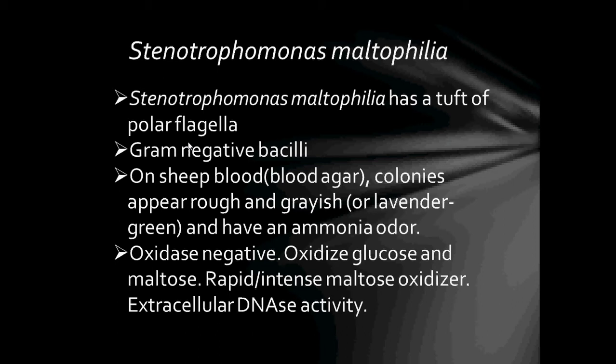The first bacteria in this video is Stenotrophomonas maltophilia. Stenotrophomonas maltophilia has a tuft of polar flagella, they are gram-negative bacilli, and on sheep blood or blood agar colonies appear rough and greyish or lavender-green with an ammonia odour.